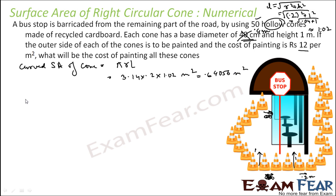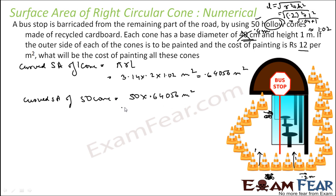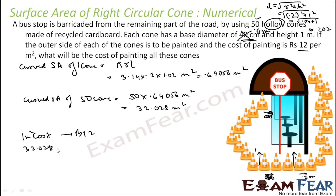For 50 cones: 50 × 0.64056 = 32.028 meters square total curved surface area. The cost of painting is 12 rupees per meter square, so total cost = 12 × 32.028 = 384.34 rupees. That is the answer.